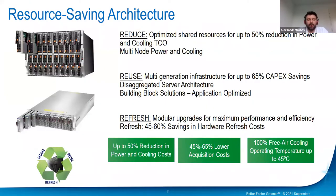One of the most important goals we pursue is creating resource-saving architecture, and when we talk about resource-saving, we mean SuperBlade systems. Blade system design allows you to reduce power and cooling TCO by up to 50%. Multi-generation infrastructure allows you to use the same platform and internal switches, update only the computing nodes, increase solution lifecycle, and reduce costs.